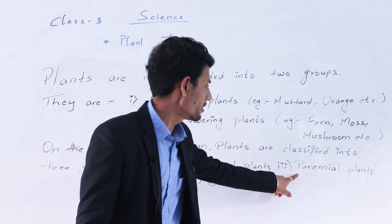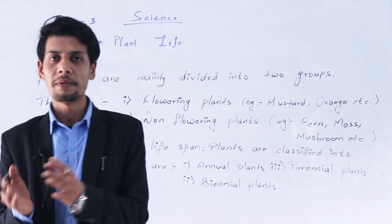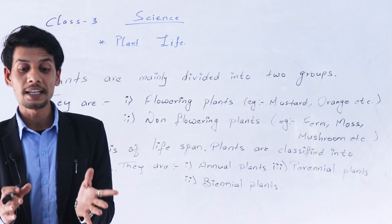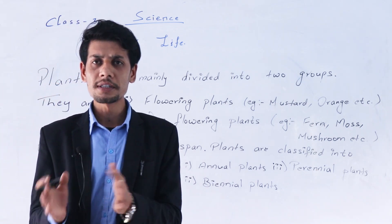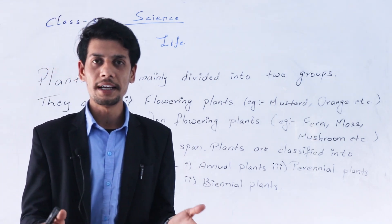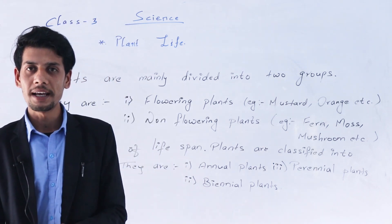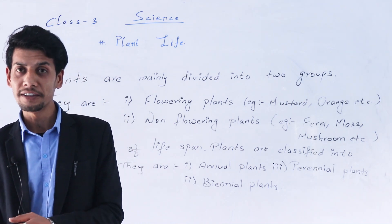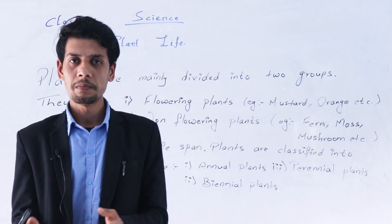The first type is annual plants and the second is biennial plants. Now I am going to discuss about perennial plants. Perennial plants are plants that live for more than two years — they survive for many years. For example, mango, orange, peepal, banana tree, etc. — they are examples of perennial plants.